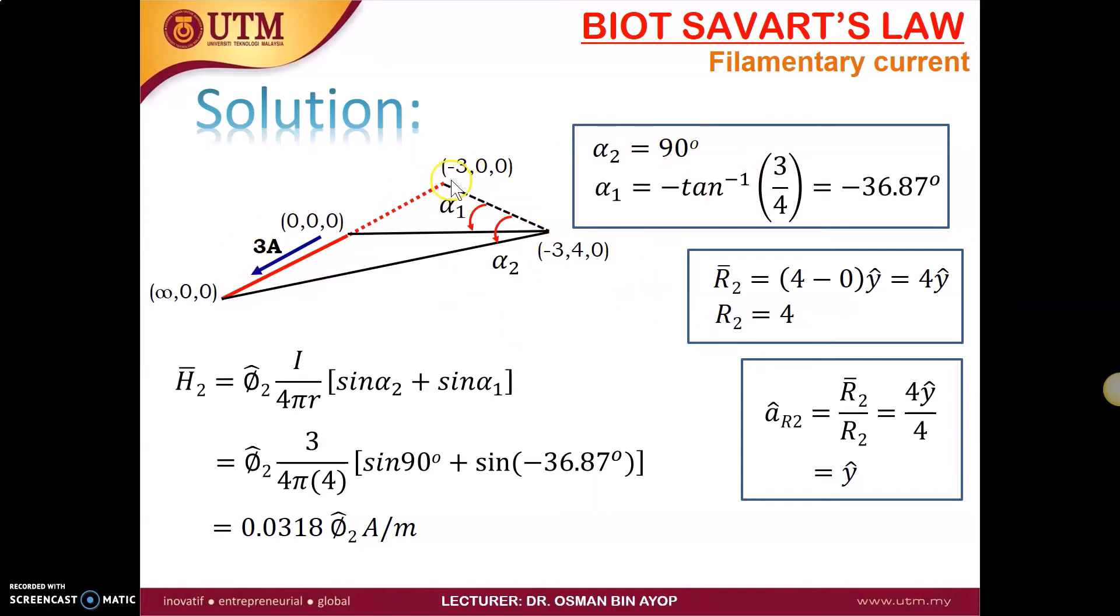And then what is about the vector R? The vector R here. Okay. We can find the R to be only we have only one Y component, which is 4 minus 0 Y, which is 4 Y. This is the vector and the unit or the magnitude is 4. So we put everything we know inside the formula and we got H₂ to be 3. The magnitude of current is 3. 3 divided by 4π4 sine 90 plus sine negative 36.87. And this is the solution, 0.0318 phi ampere per meter.